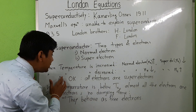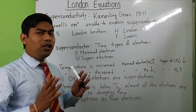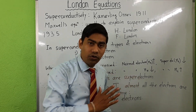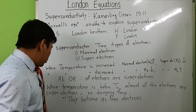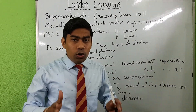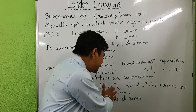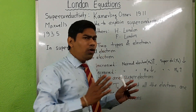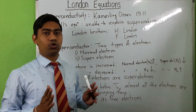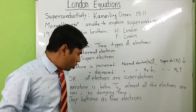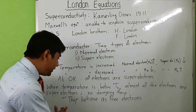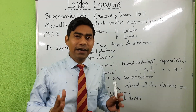At 0 Kelvin temperature, all the electrons in the superconductor are superelectrons. When temperature is below the critical temperature Tc, almost all the electrons in the superconductor are superelectrons. So there is no damping force, and hence they behave as free electrons.